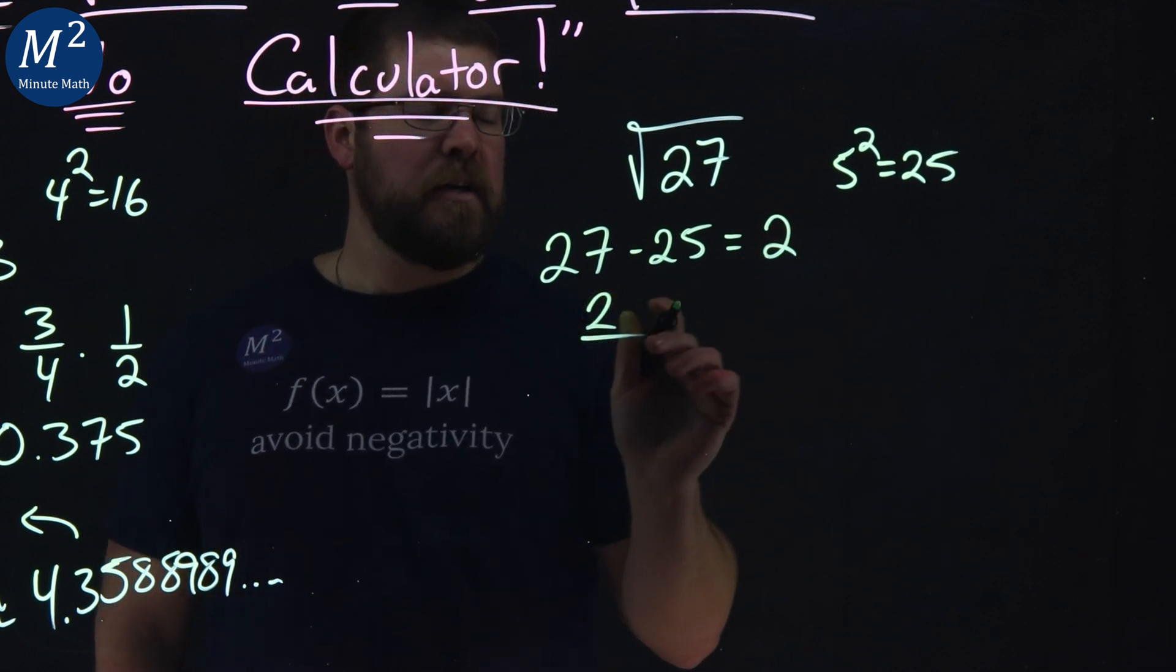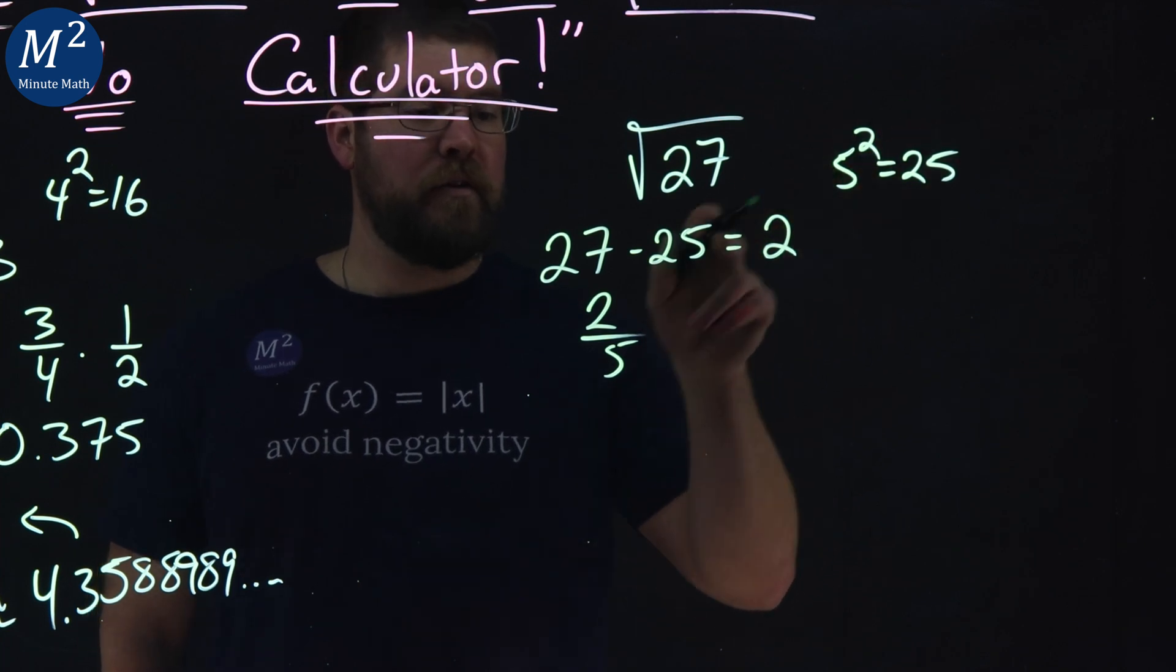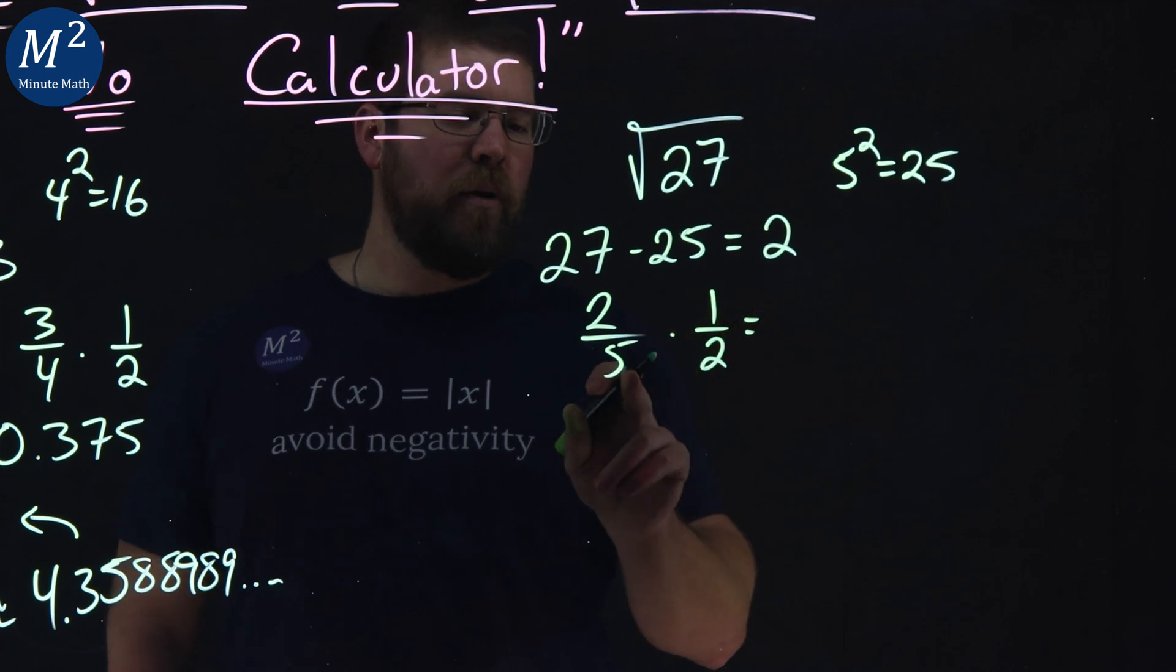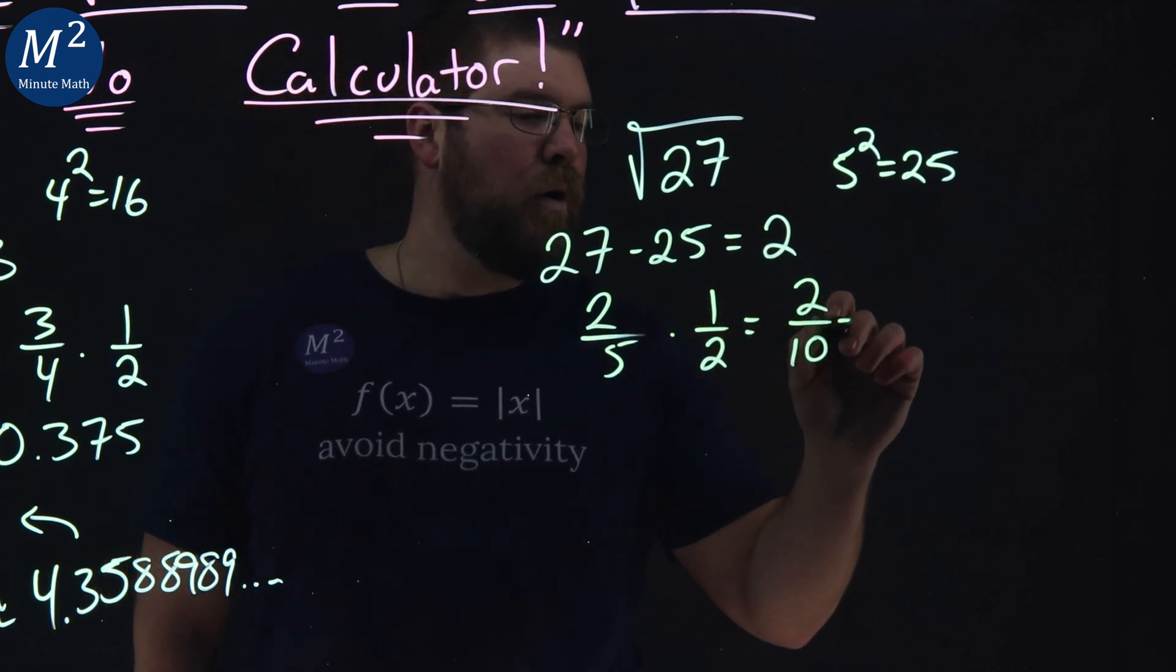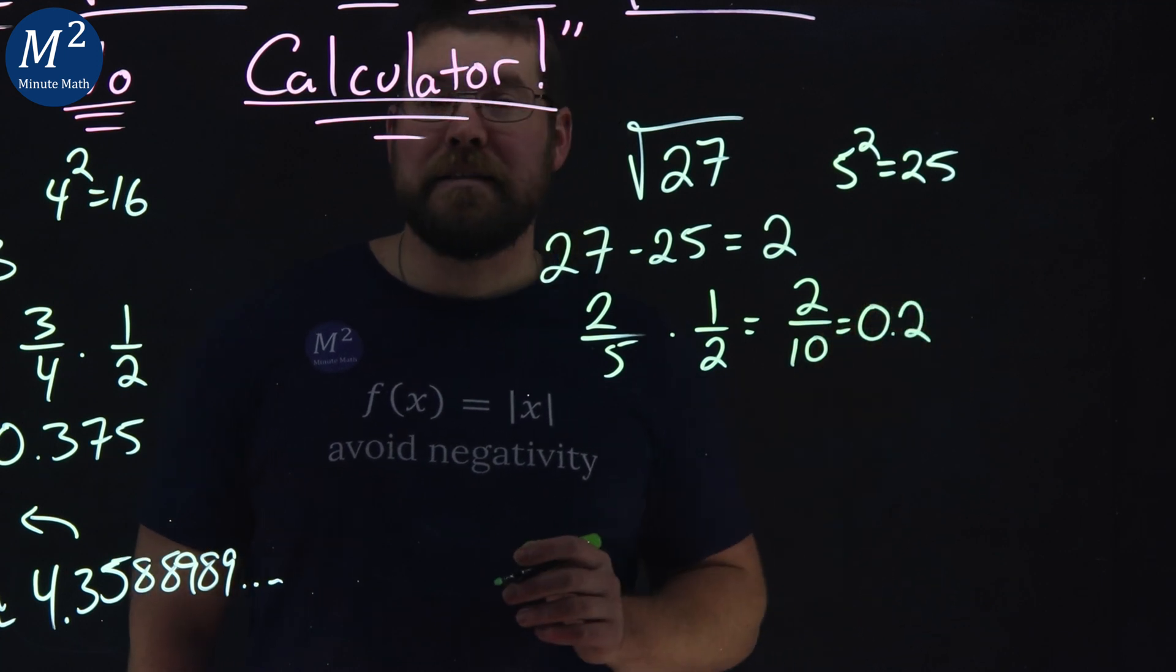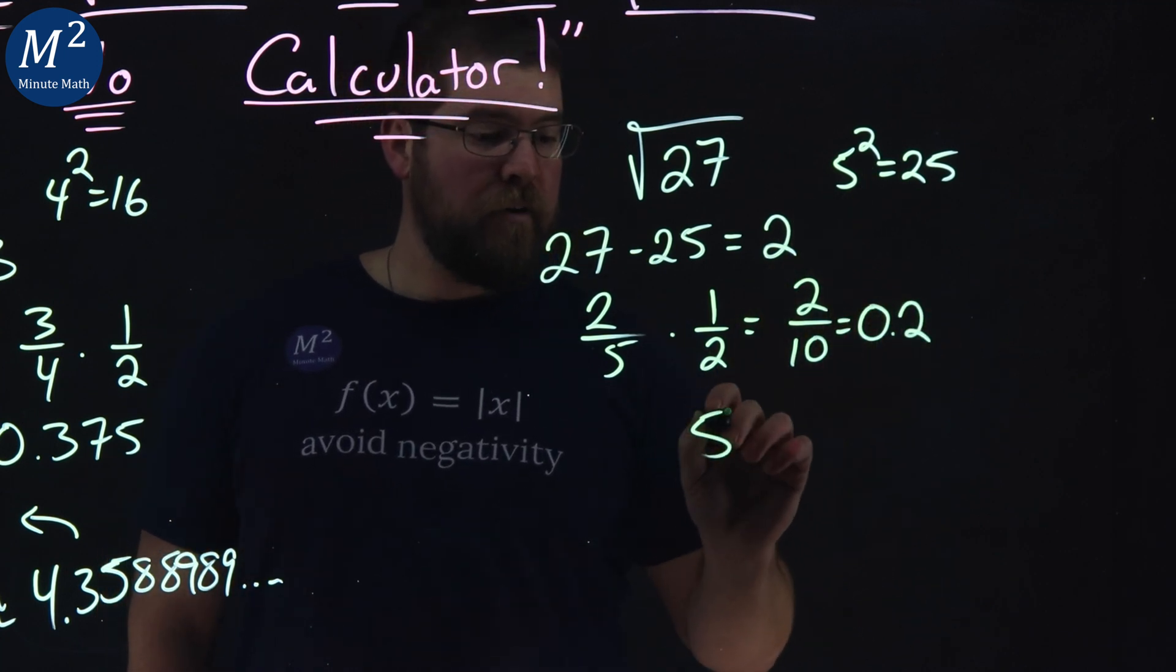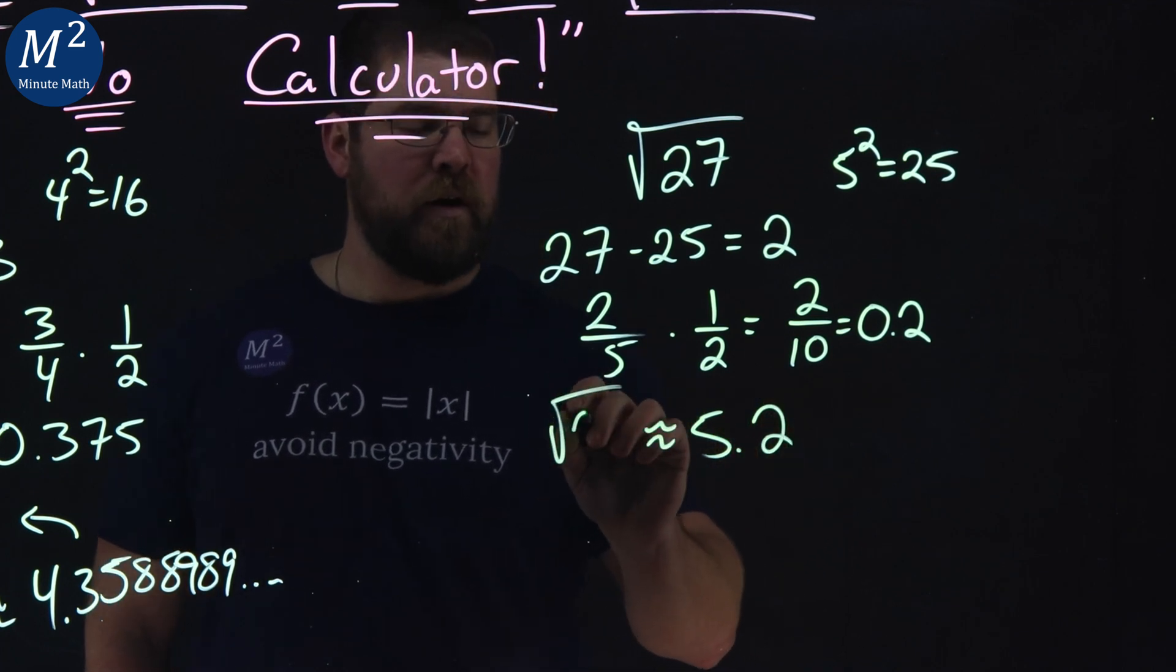I take 2, divide it by that 5. 5 squared being 25, and let's multiply it by 1 half. Or multiply the denominator by 2, and we have 2 over 10, or that's 0.2 as a decimal. We add that to 5, and we have 5.2, and that's our approximation for the square root of 27.